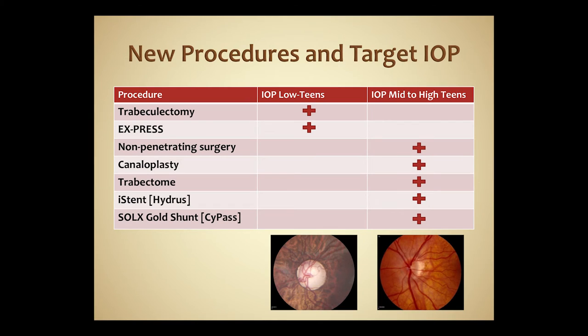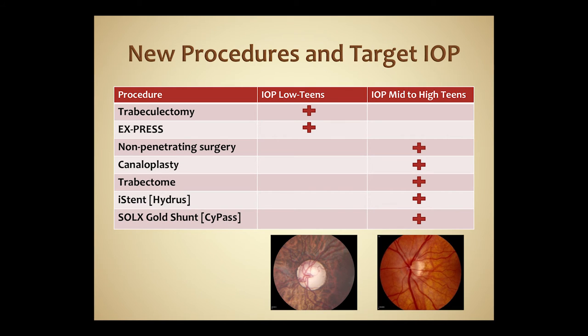We also have a variety of newer procedures: conventional trabeculectomy and Express implant, non-penetrating surgery, canaloplasty, Trabectome, iStent, and various suprachoroidal shunting techniques including the Solx Gold Shunt, CyPass, and others. Since we're dealing with a secondary glaucoma our goal is often to get the pressure into the mid-to-high teens. Many of these new procedures are of great interest — we are doing Trabectome and some Solx Gold Shunts especially in patients who have failed drainage implant surgery. These are useful approaches we are now exploring and may have a niche in our armamentarium going forward.